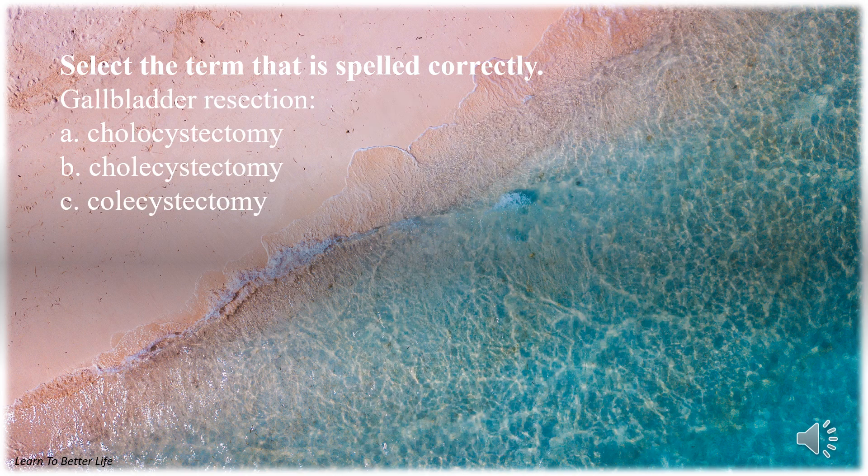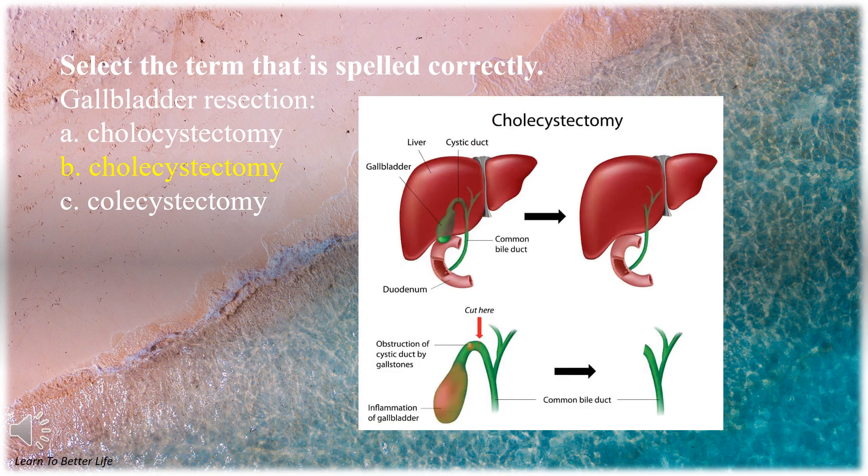Select the term that is spelled correctly. Gallbladder resection. A. Cholecystectomy. B. Cholecystectomy. C. Cholecystectomy. The answer is B. Cholecystectomy.